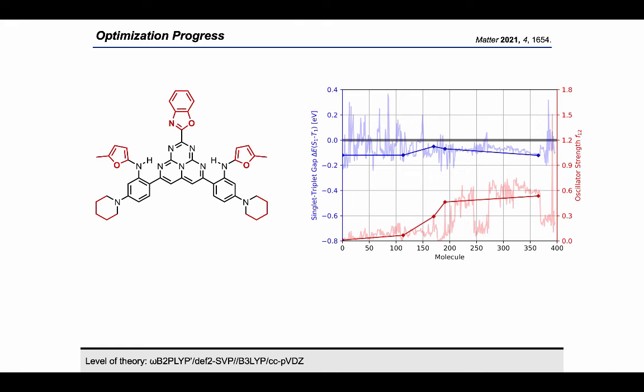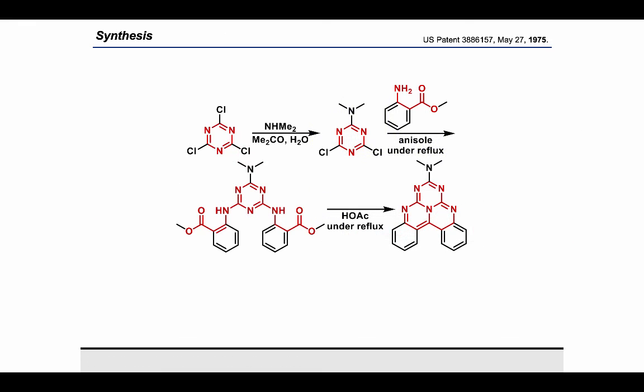While we were happy with the property trade-off in the best molecules we found, we were unhappy with the structures themselves as the core azaphenalene structure depicted here only has very minimal literature precedents. We could only find one patent from 1975 that ever synthesized a related structure as depicted here. The harsh conditions necessary for this synthesis makes this family of structures hard to work with and we anticipated that significant synthetic development would be necessary before this family of structures could become interesting for experimental study.